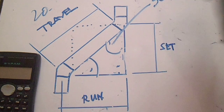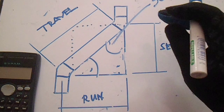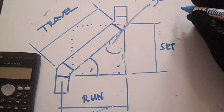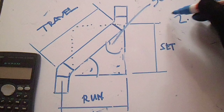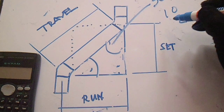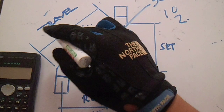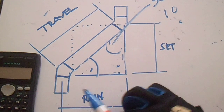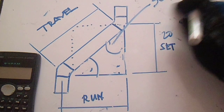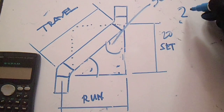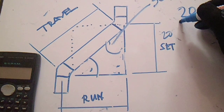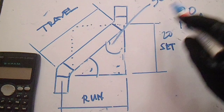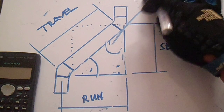For 30 degrees: if the given is run of 10, you can multiply it by 2 to find this travel. So 2 multiplied by 10 equals travel. Now if the given is set of 20, multiply it by 1.154 to find this travel. So 20 multiplied by 1.154 equals travel for 30 degrees.